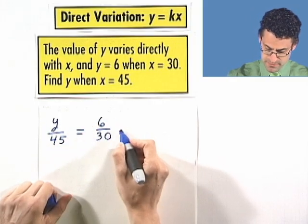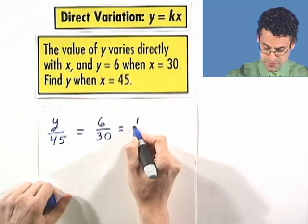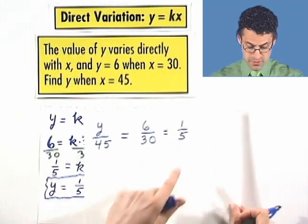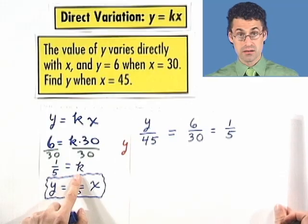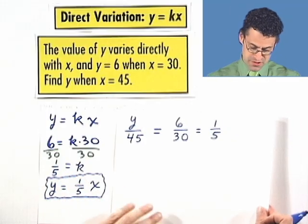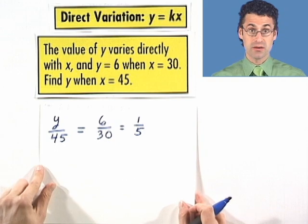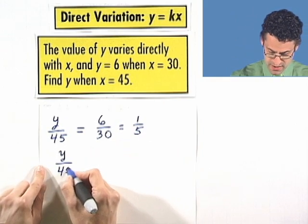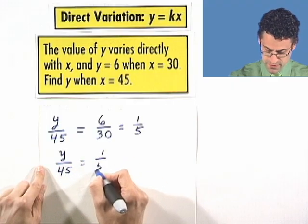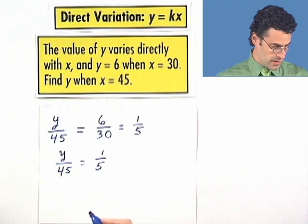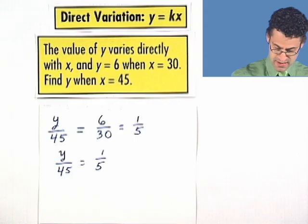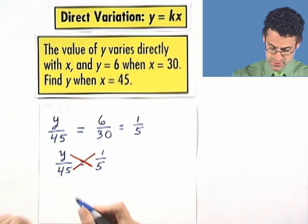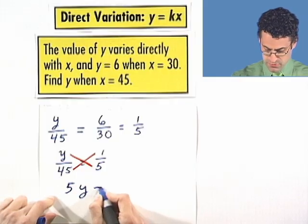Well, we could simplify this a little bit. And we'd see here, this is one-fifth. So we have one-fifth. Well, now we have to solve this ratio. Y over 45 equals one-fifth. And so we can use the cross product. And if we do that, we see 5y equals 45.